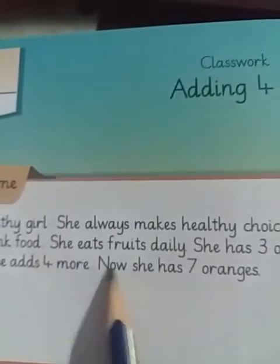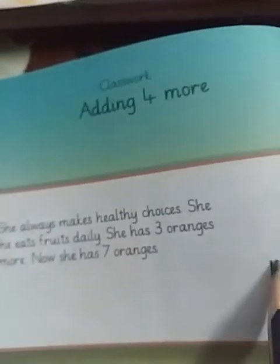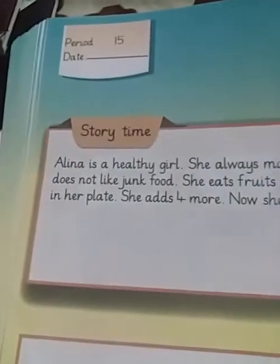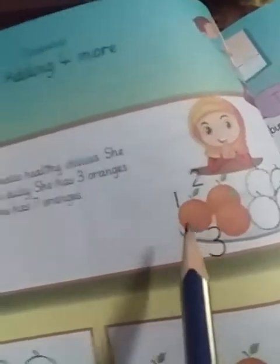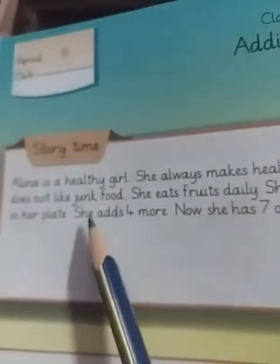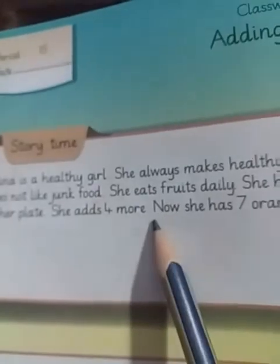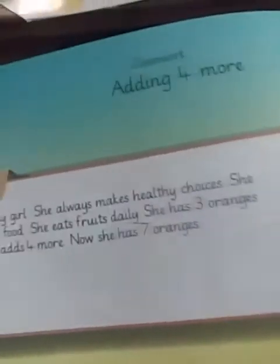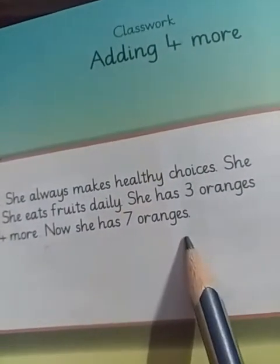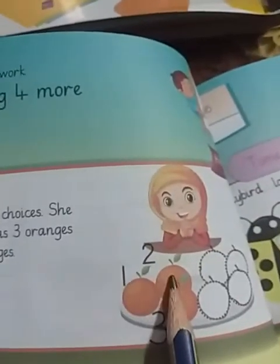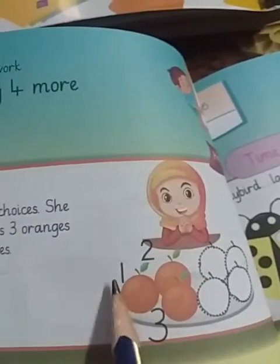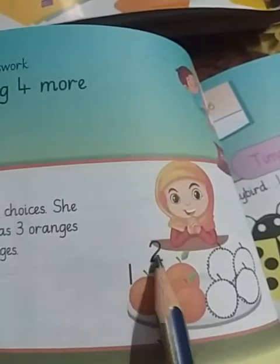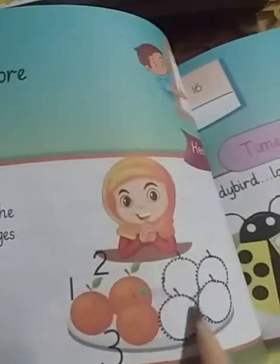She eats fruits daily. She has three oranges in her plate. She adds four more. Now she has seven oranges. You see it here: one, two, three — three oranges — then add four more.